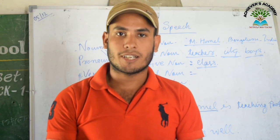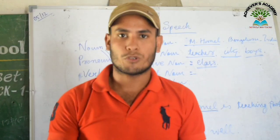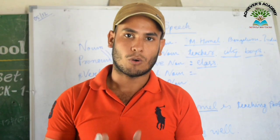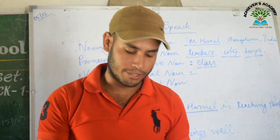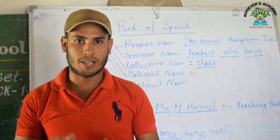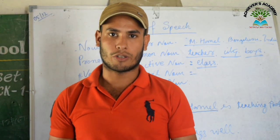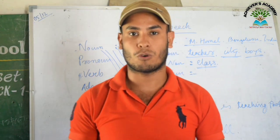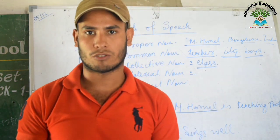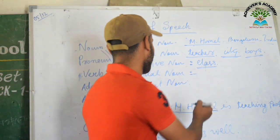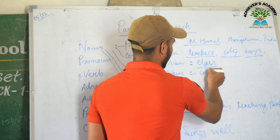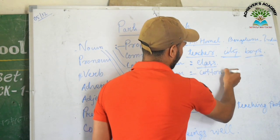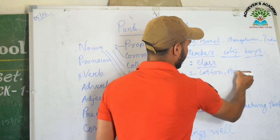Now, material noun. A material noun is a noun which is extracted from nature or is used to make other things. For example: cotton, gold, copper, bronze — these all are material nouns.